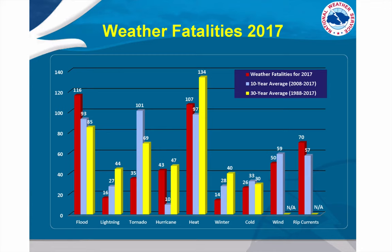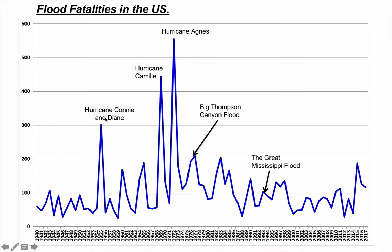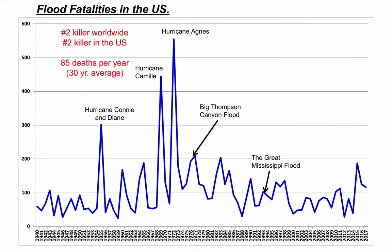In the United States, where does flooding rank? In the 30-year average, it ranks second at 85 fatalities a year. In 2017 — just last year from when I'm recording this in summer of 2018 — it was the deadliest form of weather. Not only is it the second deadliest form of weather in the US, but it's also the number two killer worldwide. We average about 85 deaths per year from flooding. In my opinion, I believe every single one of these flood deaths is preventable.